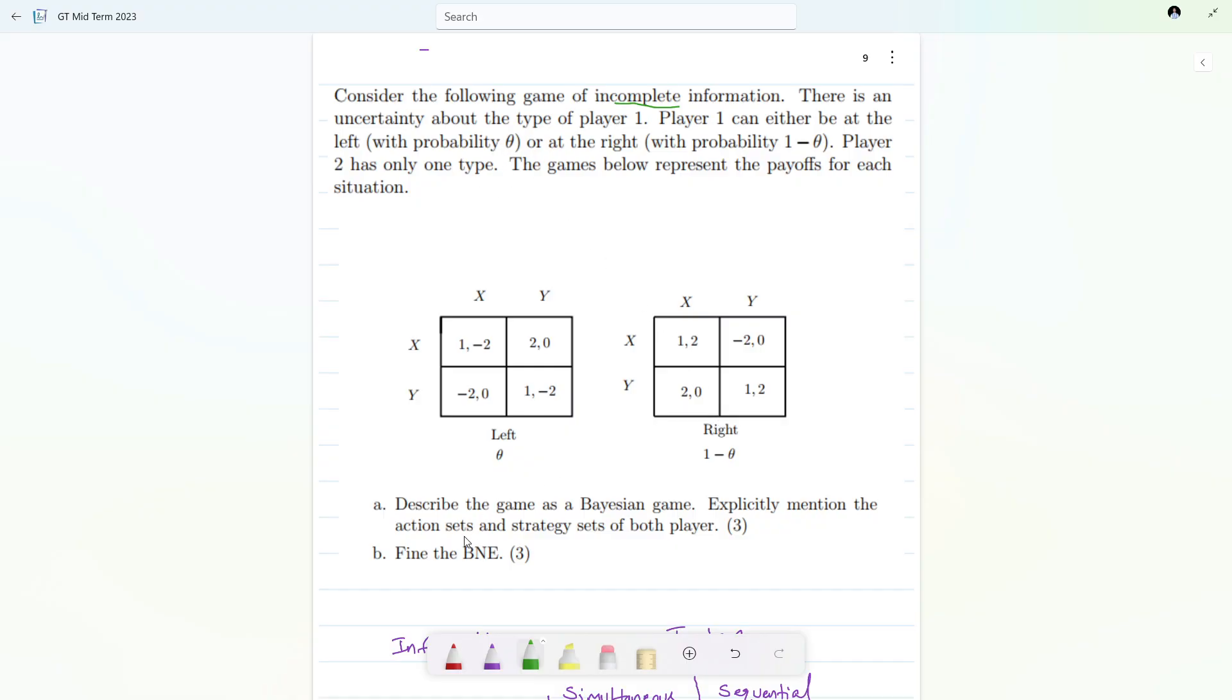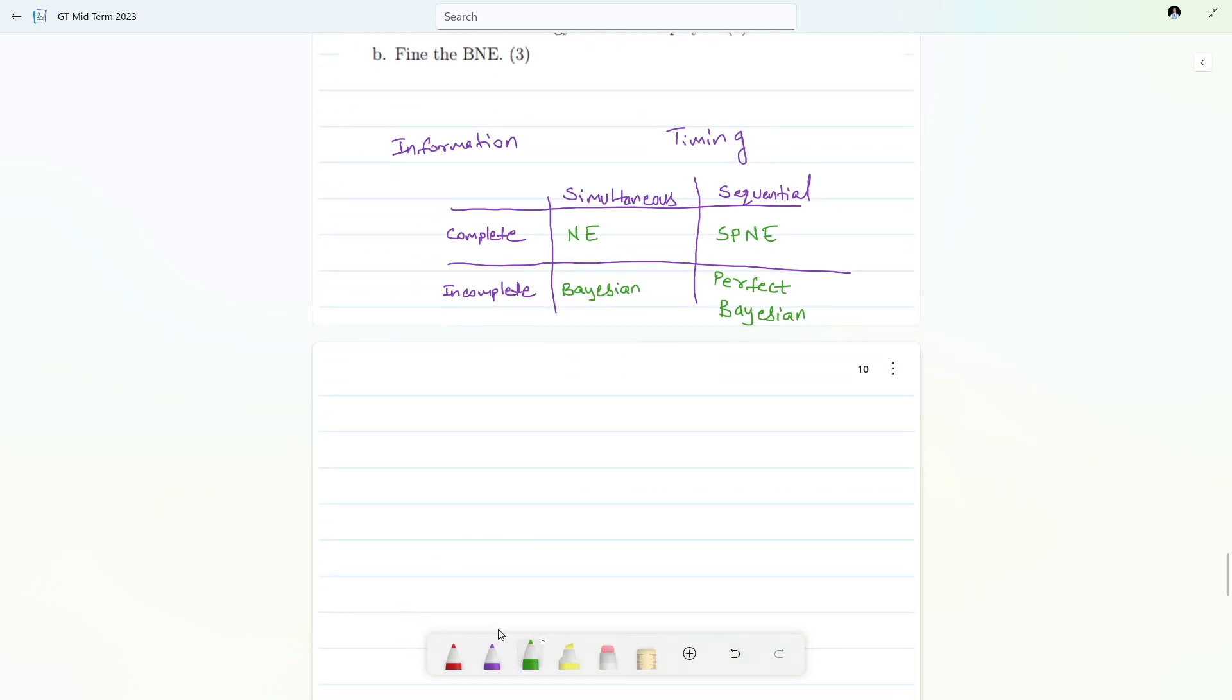Player two has only one type and below are the payoffs. Describe the game as a Bayesian game, explicitly mention the action sets and strategy sets of both the players. So let's see. Let me change the color.